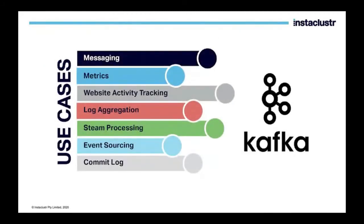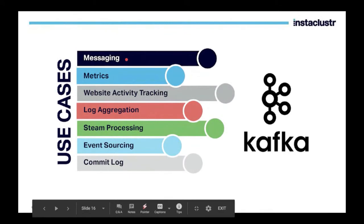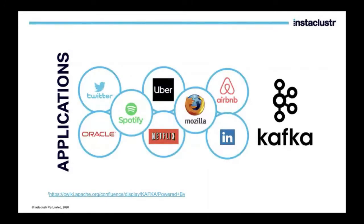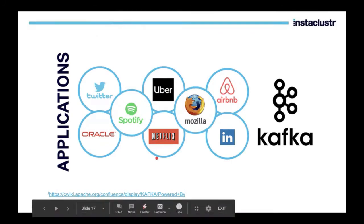Some of the use cases are messaging — because it's a log message bus — metrics for storing and consuming metrics by various systems, website activity tracking, log aggregation, stream processing, event sourcing as we have seen in the microservices architecture, and as a commit log for any transactional activity. Some big players using Kafka include Oracle, Spotify, Twitter, Uber, and Netflix — all of these companies have very big Kafka deployments.